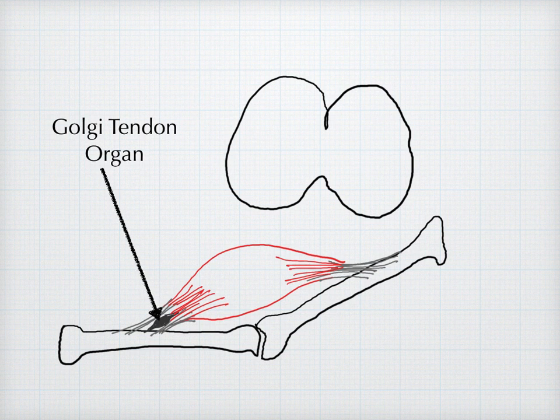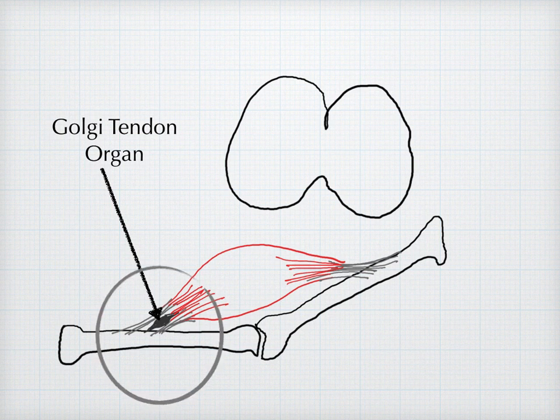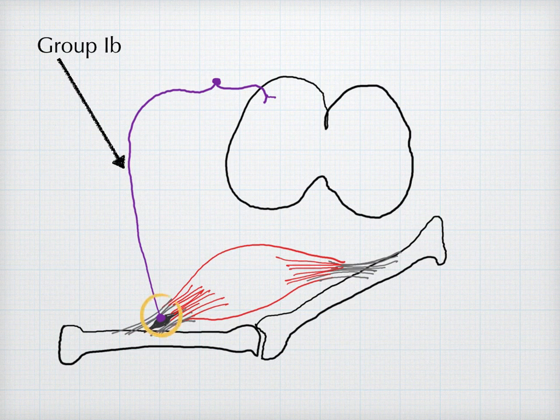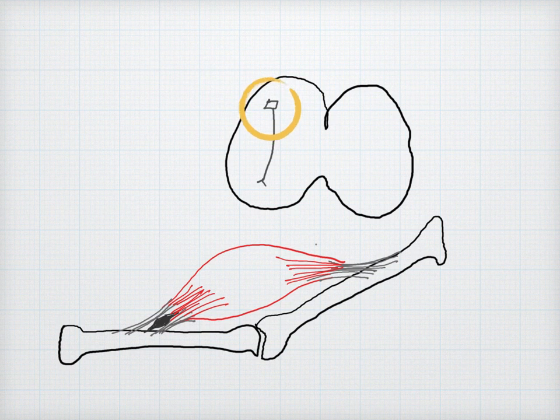The Golgi tendon organs are in series with the extrafusal muscle fibers and lie within muscle tendons. Afferent group 1b sensory nerve fibers carry the impulses from the Golgi tendon organs to the spinal cord, which then affect an interneuron, which then activates alpha motor neurons of the same muscle.